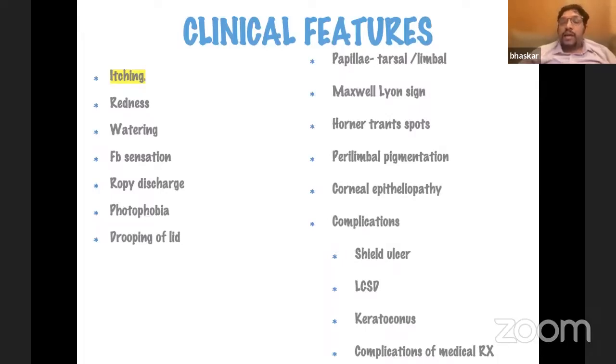When looking at clinical features, papillae — whether in the tarsal conjunctiva or at the limbus — are one of the most important signs, apart from the presence of Horner-Trontas dots in active disease. You can also look at perilimbal pigmentation as a sign of VKC disease activity. What we are all worried about is corneal epitheliopathy or changes on the cornea secondary to the severity of the allergic eye disease, including complications such as limbal stem cell deficiency, keratoconus, or glaucoma from medical measures.